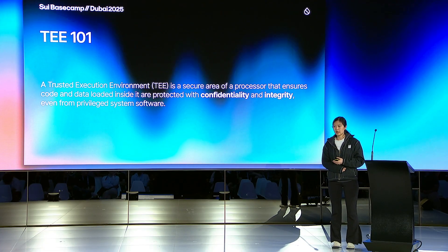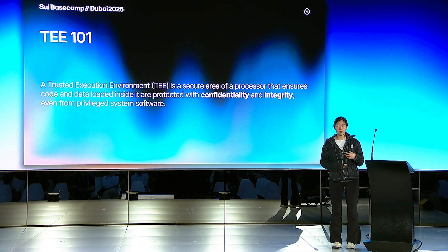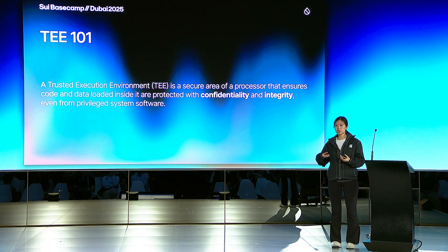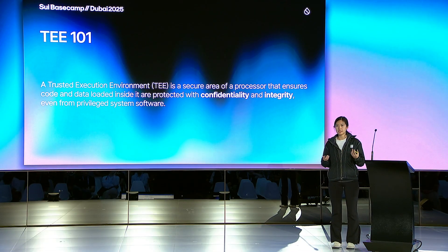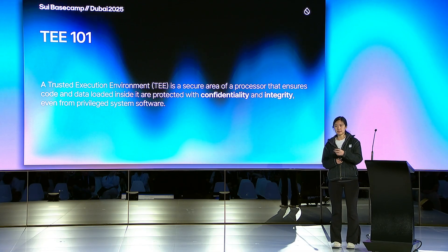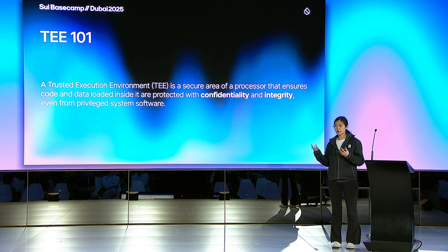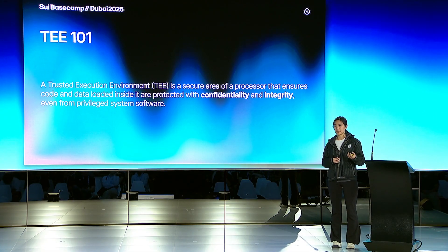The second property is another very important one: TEE computation results are verifiable. When you ask a TEE to process a piece of data, you get a response called an attestation document. You can actually verify it publicly — that the code running inside the Enclave is authentic. This attestation file can be verified by anyone, any client that is outside the Enclave.